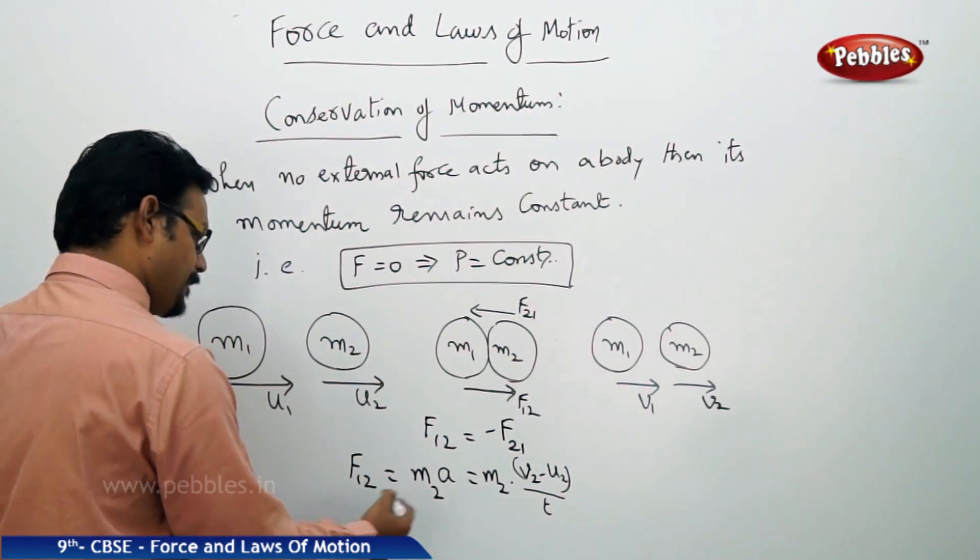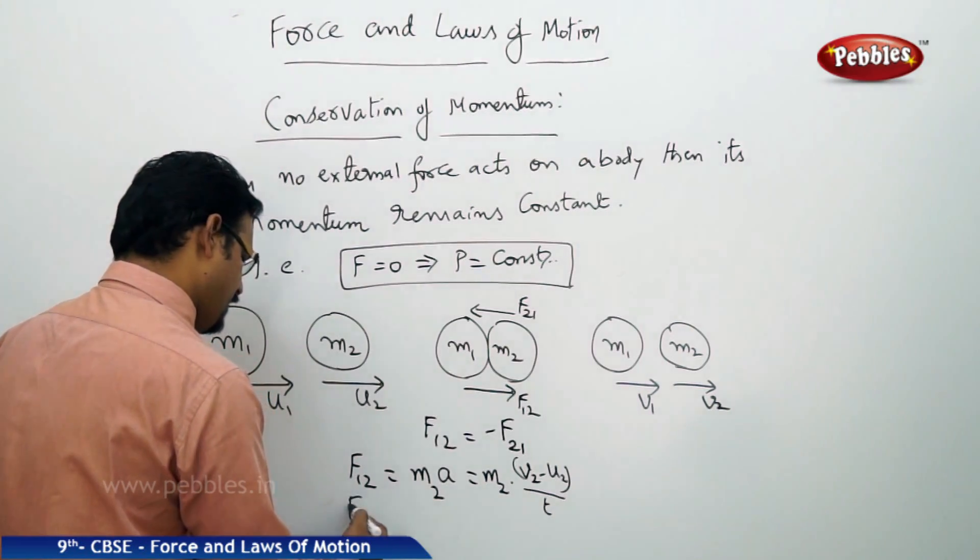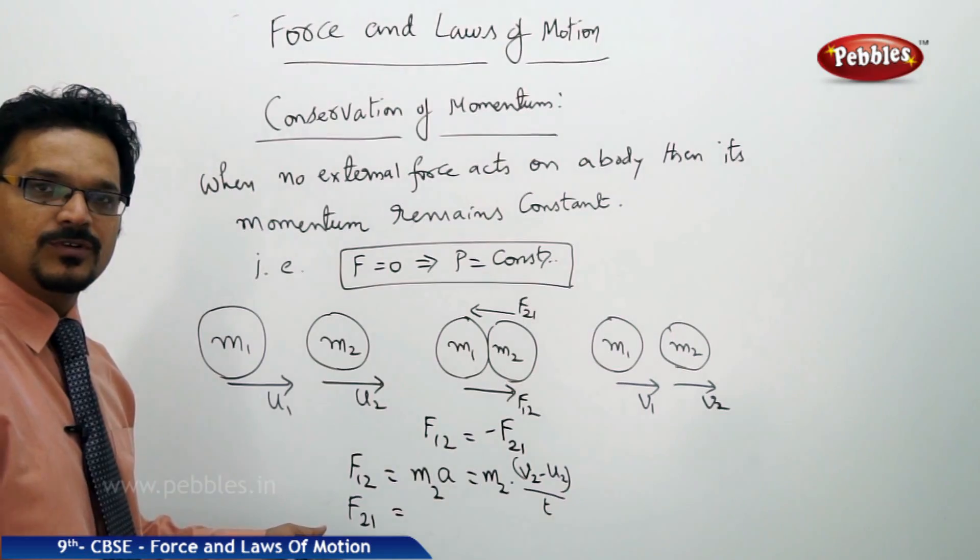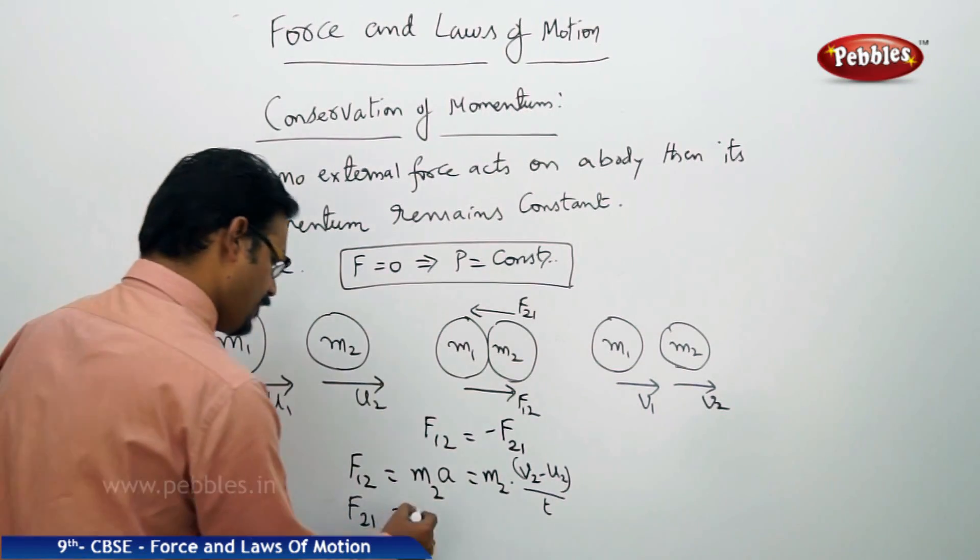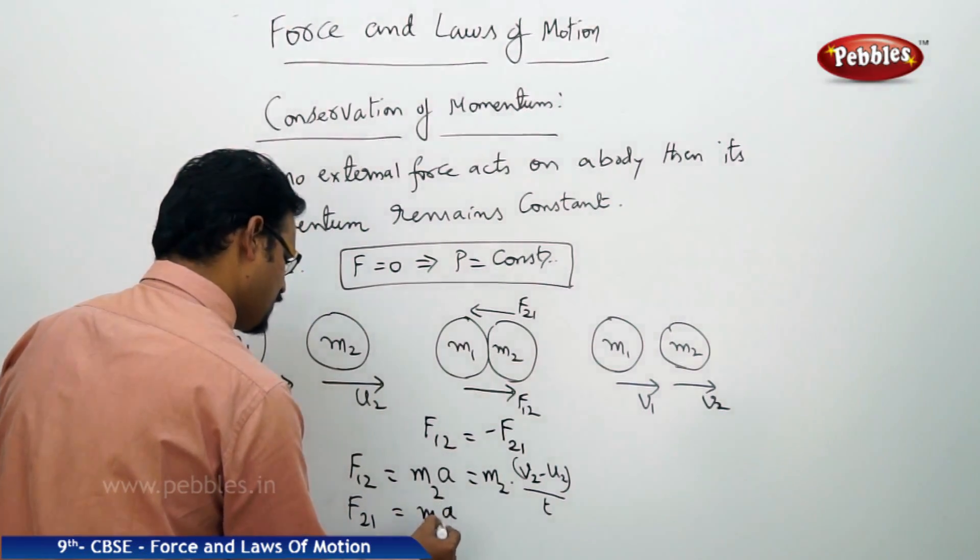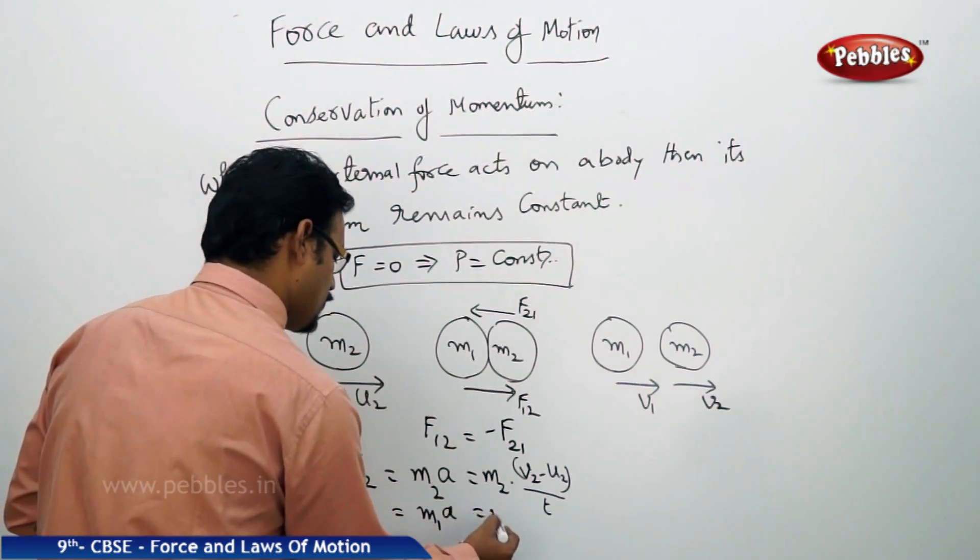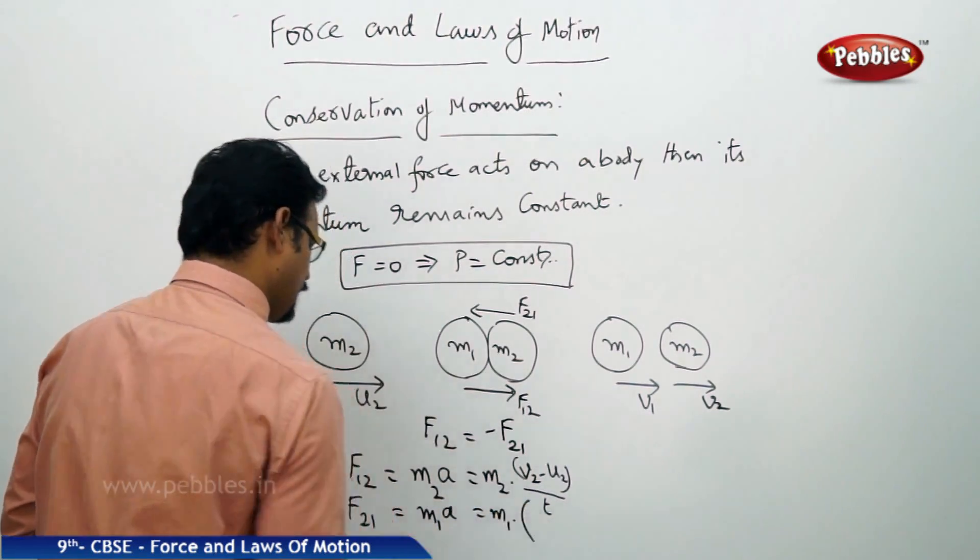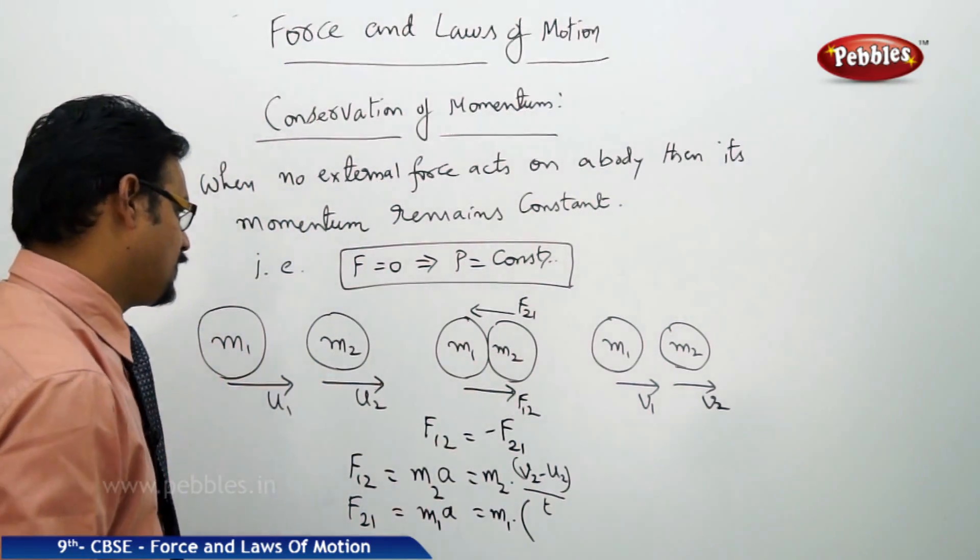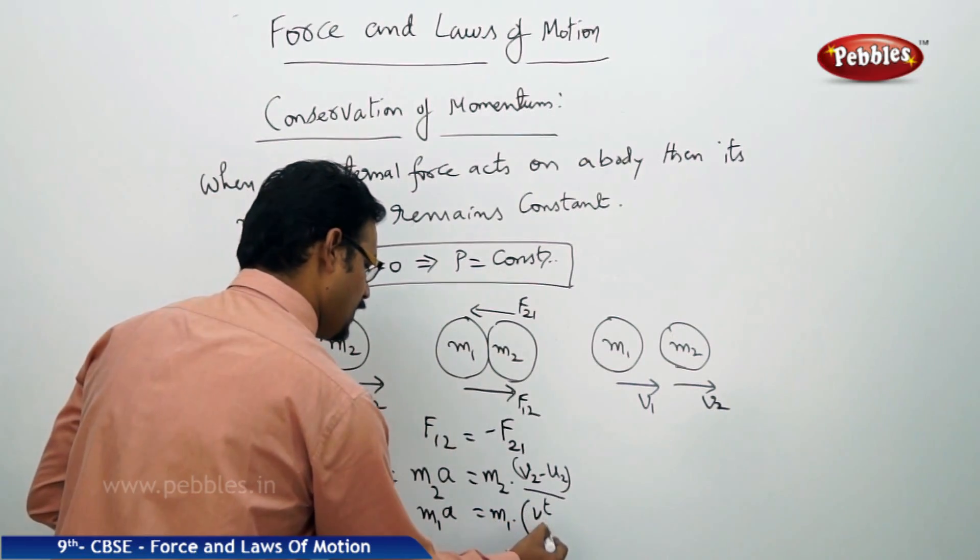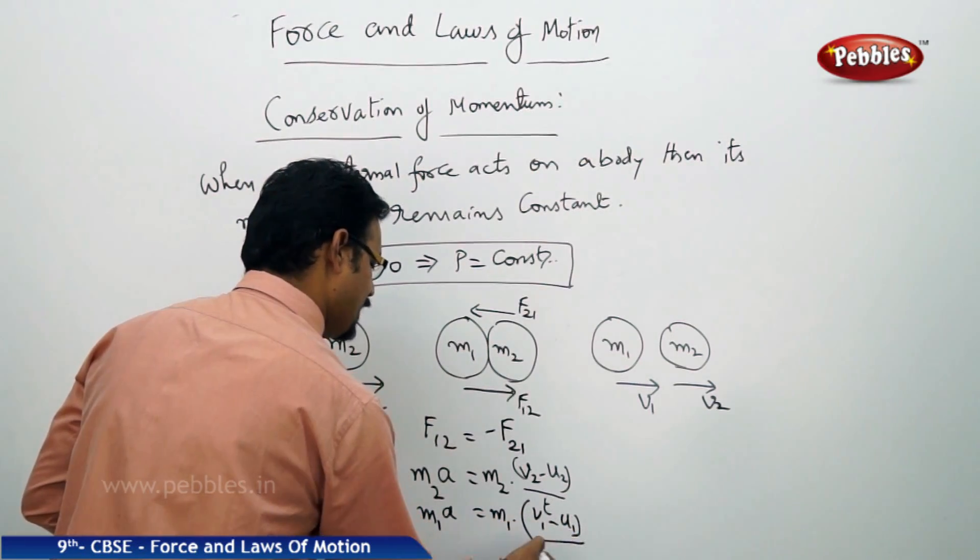Now let me write F21, force by mass m2 on m1. Same: mass into acceleration, but with the body mass m1, so m1 into a. So m1 into m1's acceleration, so m1's v1, u1, so v1 minus u1 divided by t.